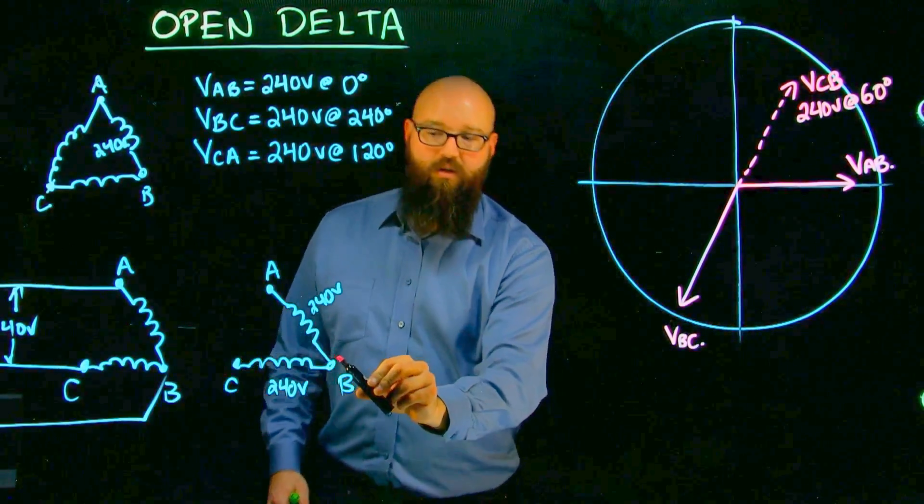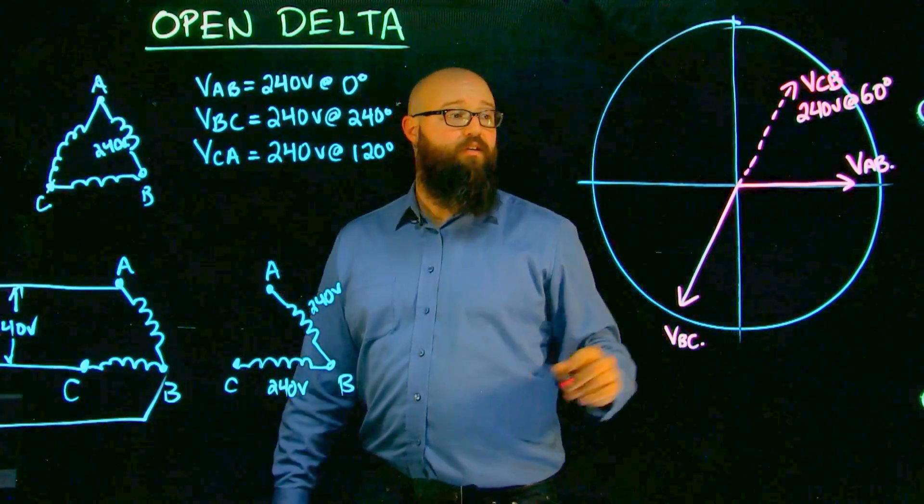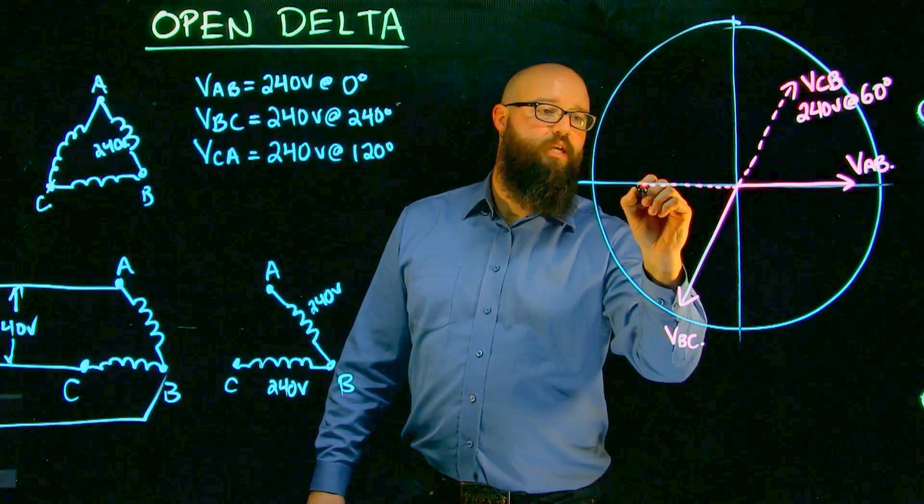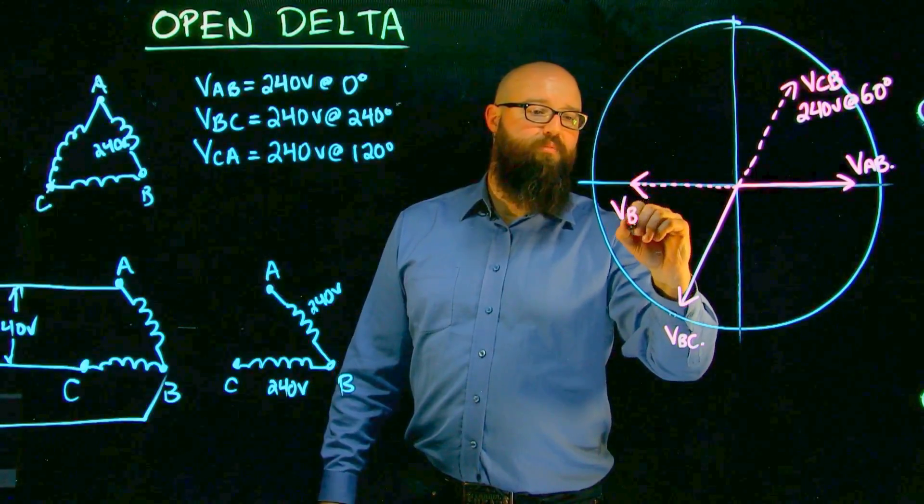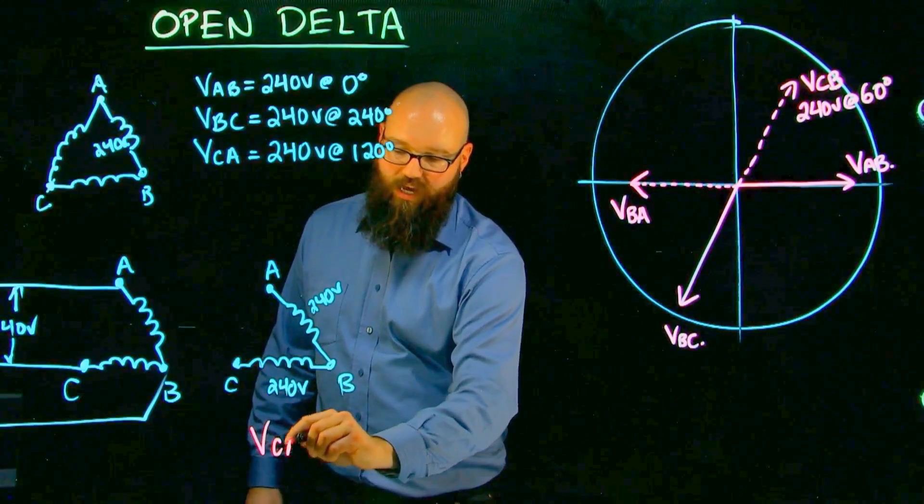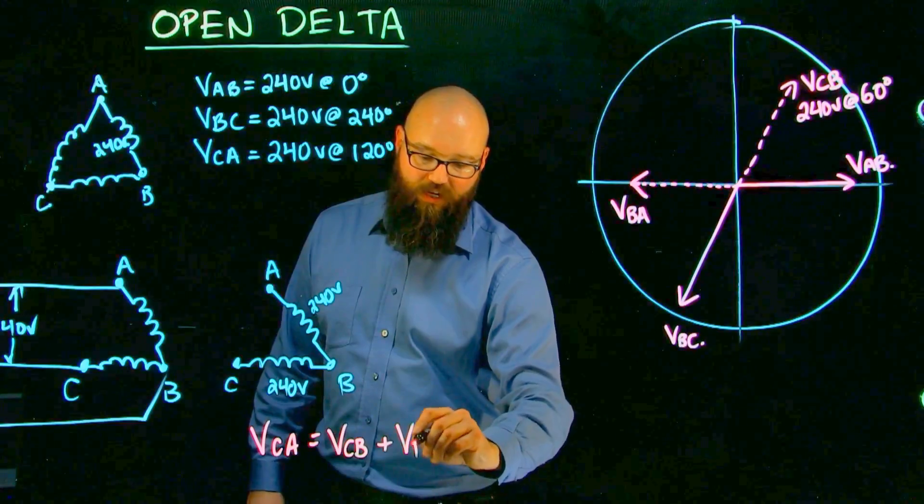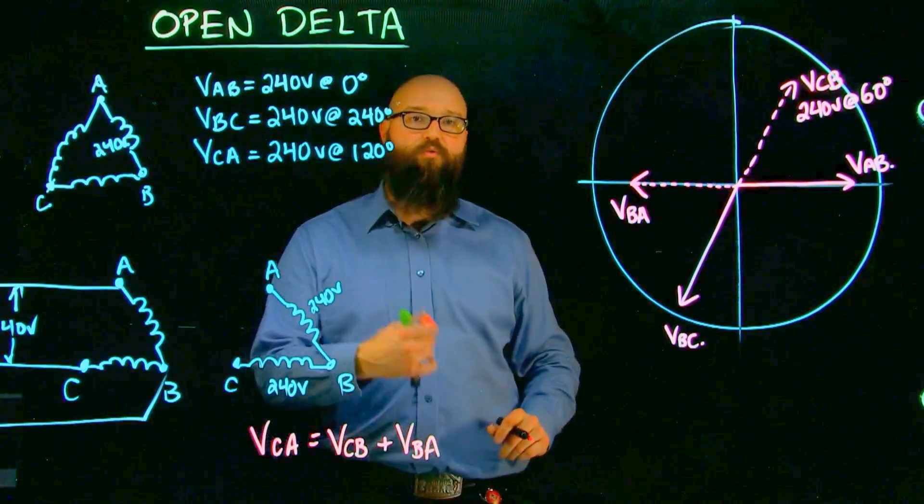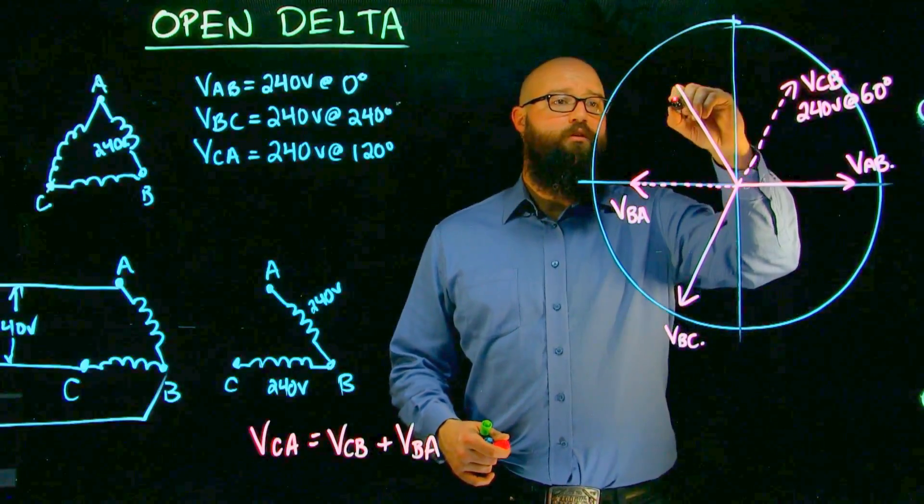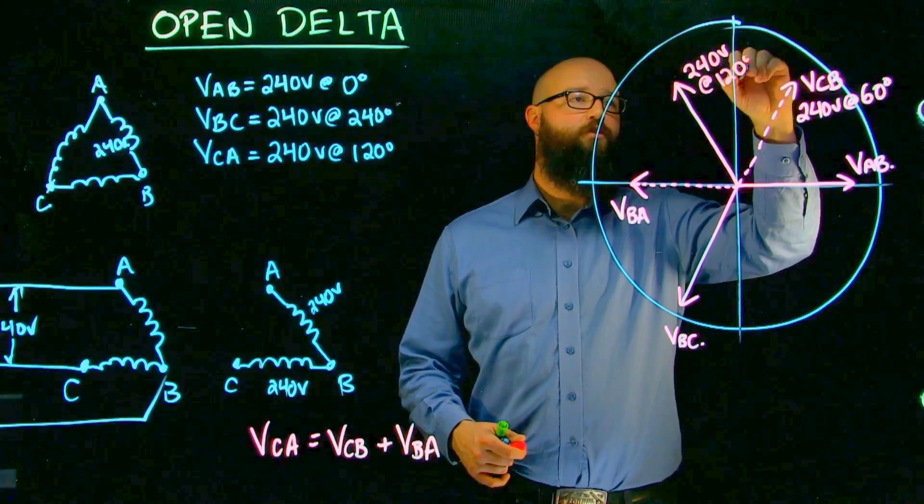Same thing. I went C to B plus B to A, which is the opposite of V A to B. If we flip 180 degrees from 0, we see there's my V B to A. So, V C to A equals V C to B plus V B to A, which if I was to do it on an H-V chart would end up with this third voltage of 240 volts at 120 degrees.